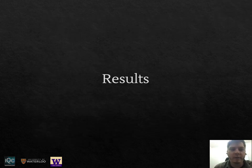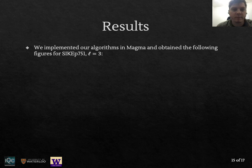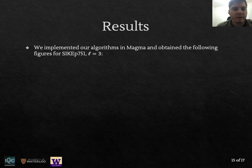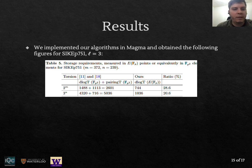Now we move on to the results and final remarks. So we have implemented our algorithms in Magma to validate our ideas. And for example, in the case of SIKE P751 and ℓ equal to 3, we have some storage figures compared to previous works. So basically, if you look at the total storage size, we are improving by a ratio of 28% or 20%, depending on the torsion we are working on.